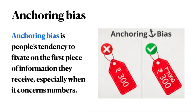Anchoring bias is people's tendency to fixate on the first piece of information they receive, especially when it concerns numbers. This piece of information becomes a reference point or anchor, and people base all subsequent decisions on this anchor. For example, initial offers have a stronger influence on the outcome of negotiations than subsequent ones.